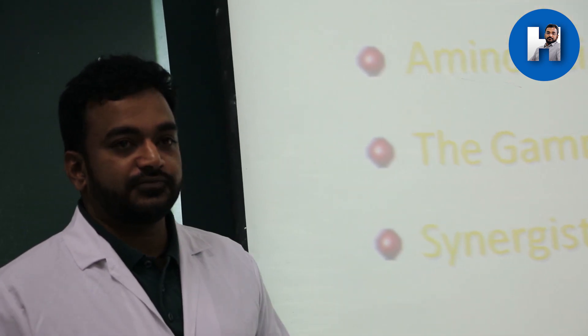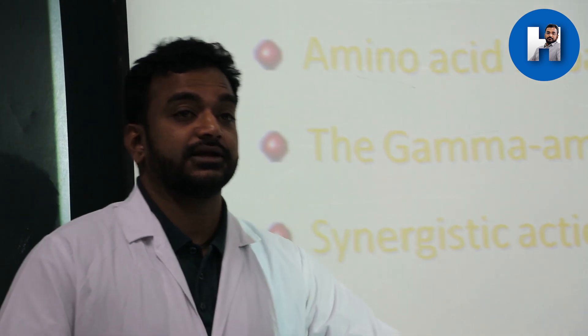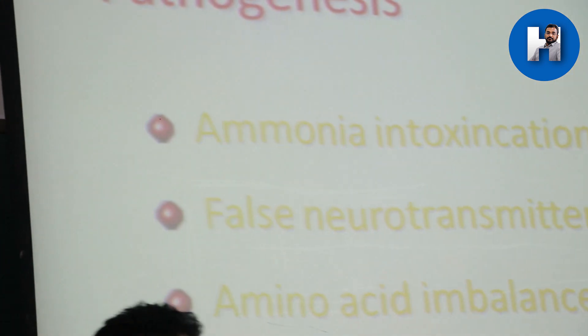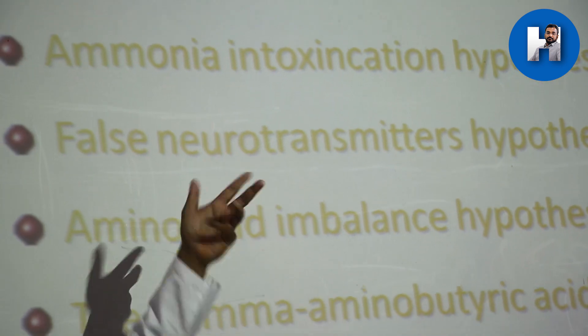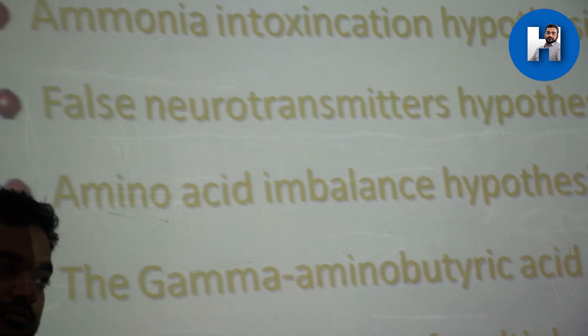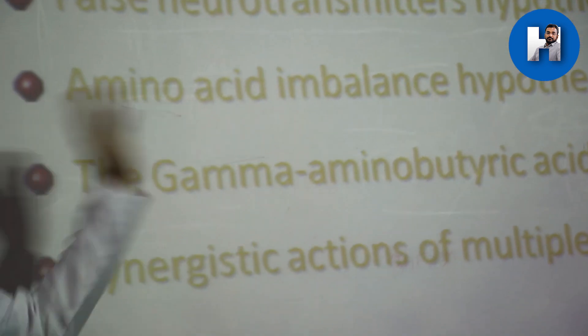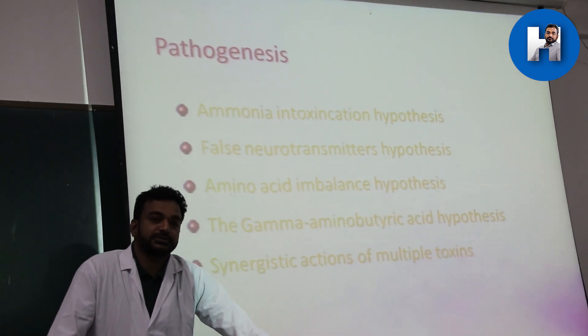The final mechanism is the synergistic action of toxins. Many compounds from the GIT are normally destroyed by the liver; in failure they accumulate and reach the brain. Importantly, none of these mechanisms - ammonia, false neurotransmitters, amino acid imbalance, or GABA - has proven sufficient alone to cause hepatic encephalopathy. Cases exist where encephalopathy is present but ammonia is low, or false neurotransmitters are absent. Therefore, all mechanisms likely act together synergistically.